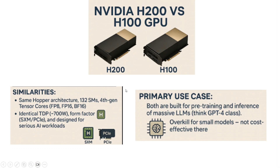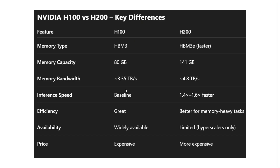Now for some theoretical differences between NVIDIA H200 and H100. First, the similarities: they follow the same Hopper architecture — in terms of architecture and hardware they are mostly the same. They differ on the memory side. Both are primarily used for pre-training and inferencing of massive LLMs and are overkill for small models, which may explain why H200 didn't perform well in the DistilBERT experiment.